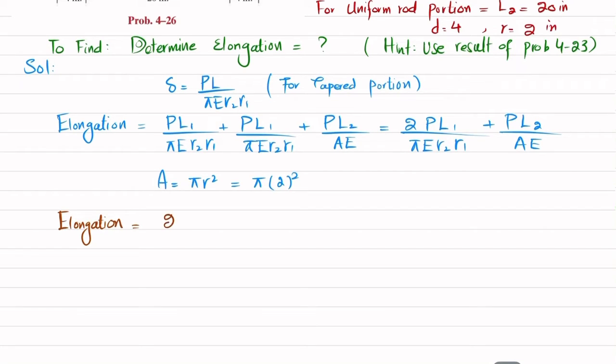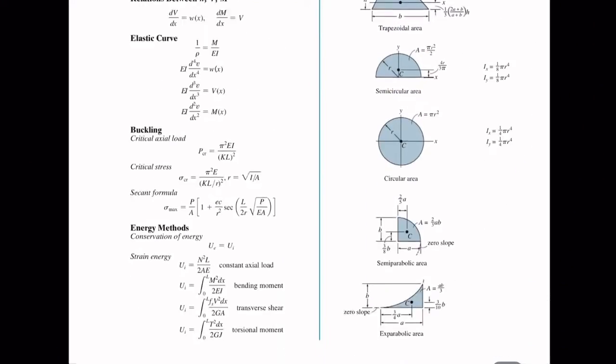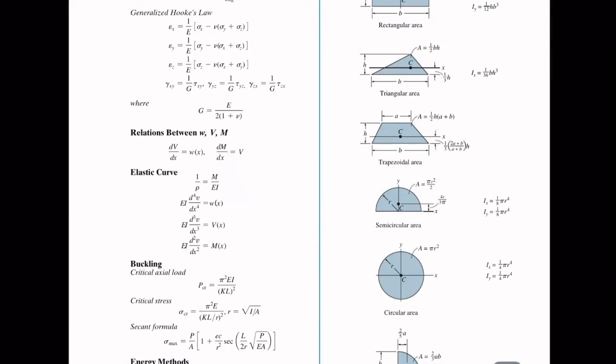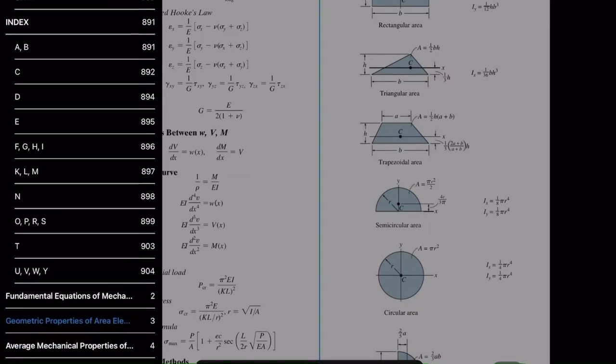Now you can put it in the formula, so total elongation will be equal to 2 multiplied by P is given as 18 kips. We will not change kips into 10 raised to power 3, we will leave it. Length L, which is tapered length L1, is 4 inches, divided by pi.